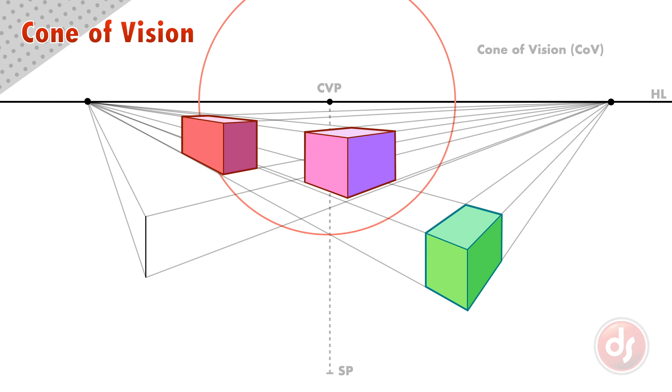This fourth box looks even more distorted because it's outside of the cone of vision, and its left side gets close to its own vanishing point. The closer an object is to its vanishing point, the more distortion it has.